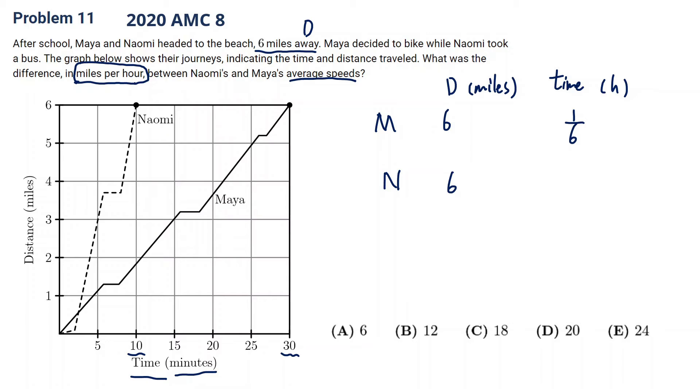the distance is also six. Oh, sorry, it's opposite. For Naomi, the time is 10 minutes. For Maya, it's 30 minutes, and it's half an hour. Let's refer to the formula. Speed equals distance divided by time. So for Naomi, speed is six divided by one-sixth, 36 miles per hour. Yeah, that's a normal speed of a car. And for Maya, six divided by half is 12 miles per hour. That's a normal speed of a bike. So their difference is 36 minus 12, which is 24.